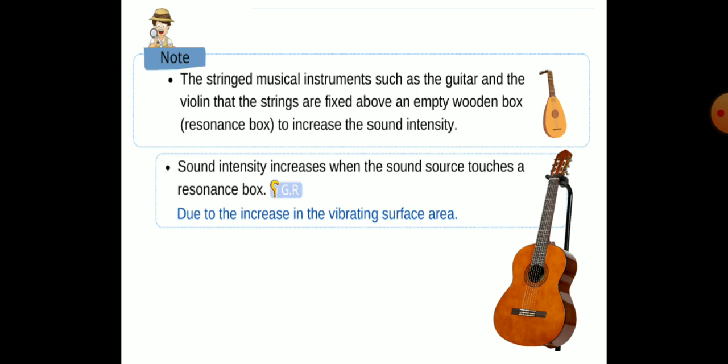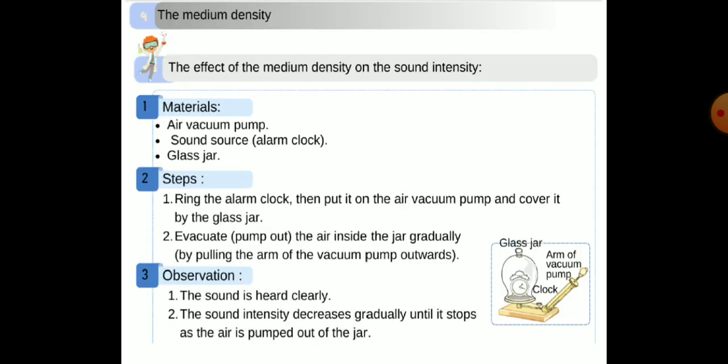Don't forget that stringed musical instruments such as guitar and violin have strings fixed above an empty bottom box — a resonance box — to increase the sound intensity. The sound intensity increases when the sound source touches a resonance box, due to the increase in the vibrating surface area.